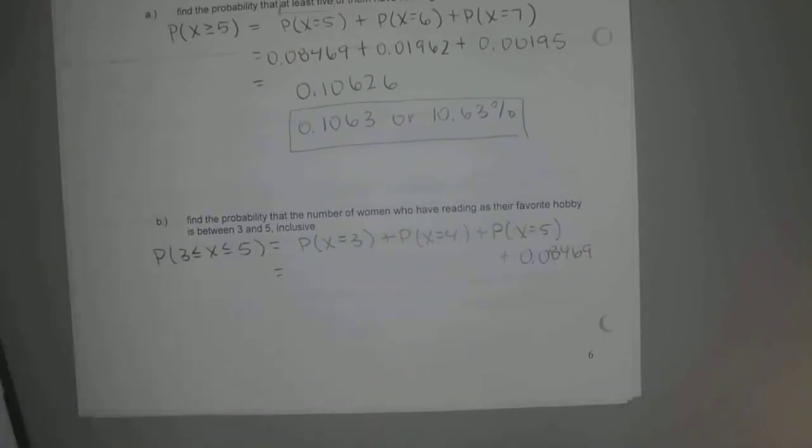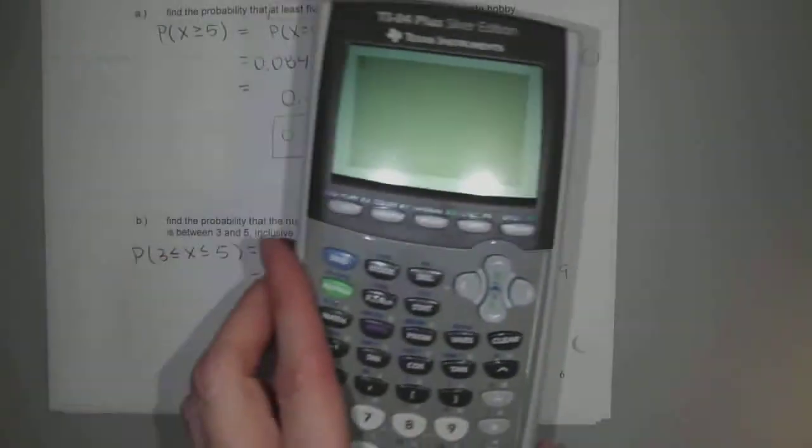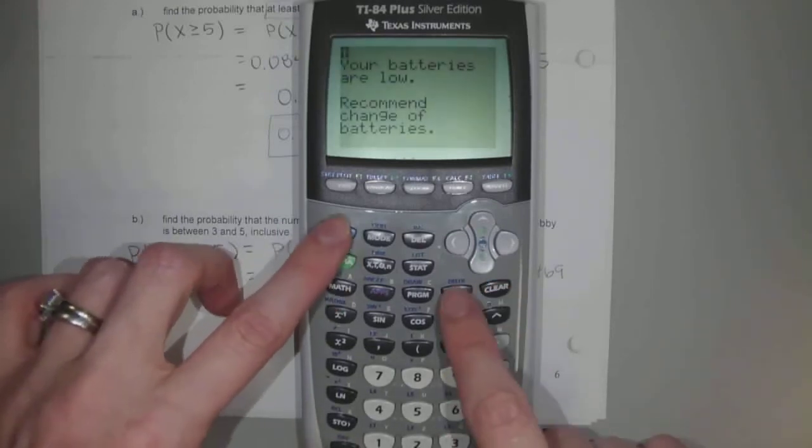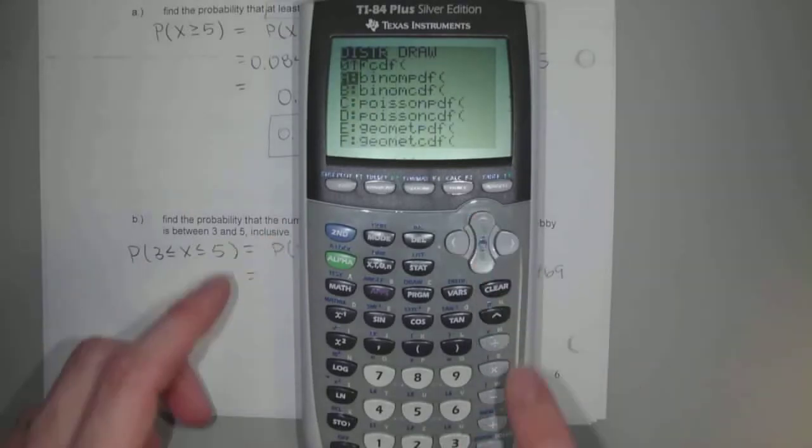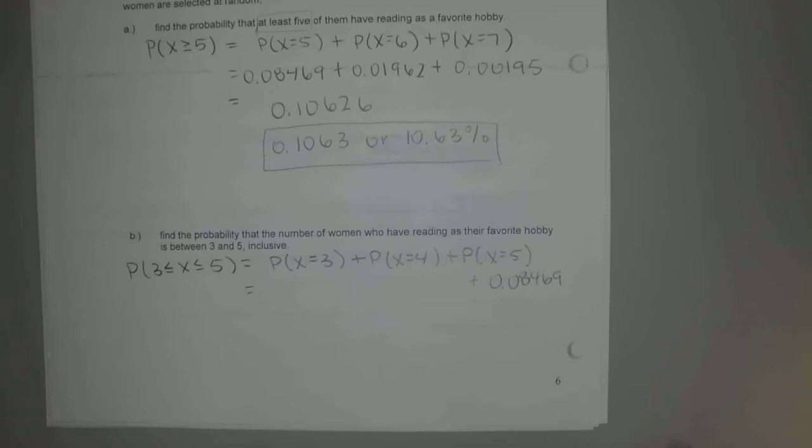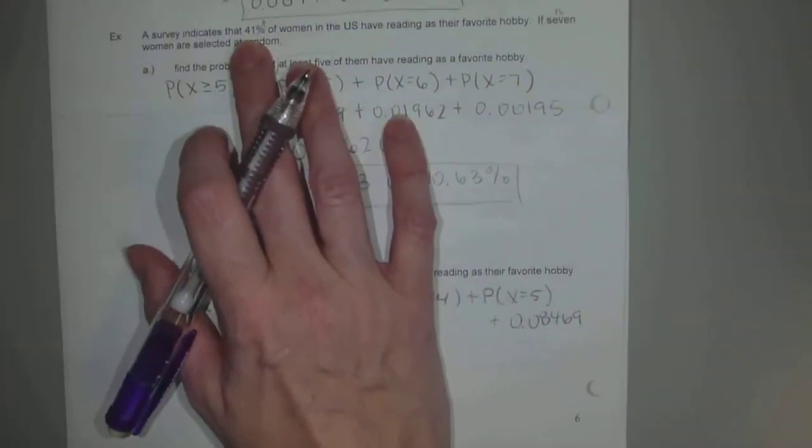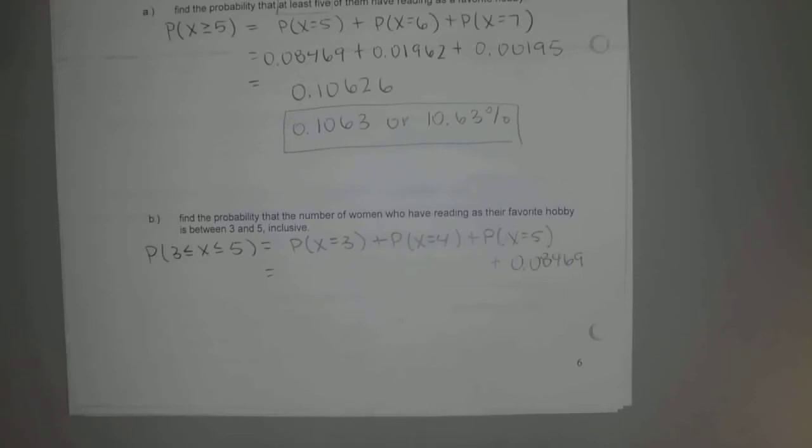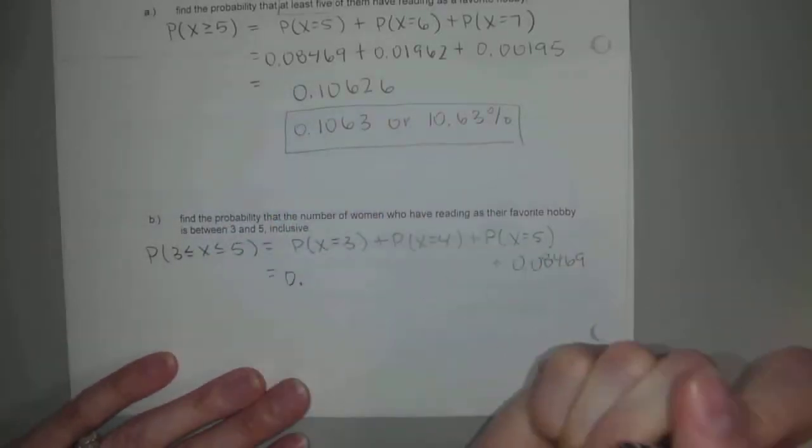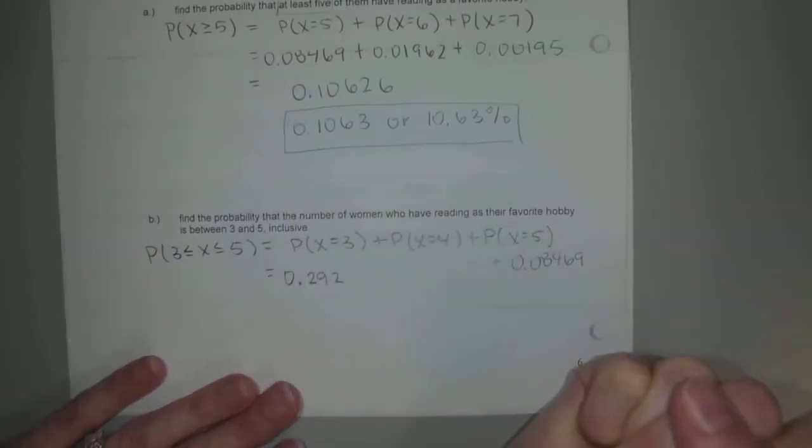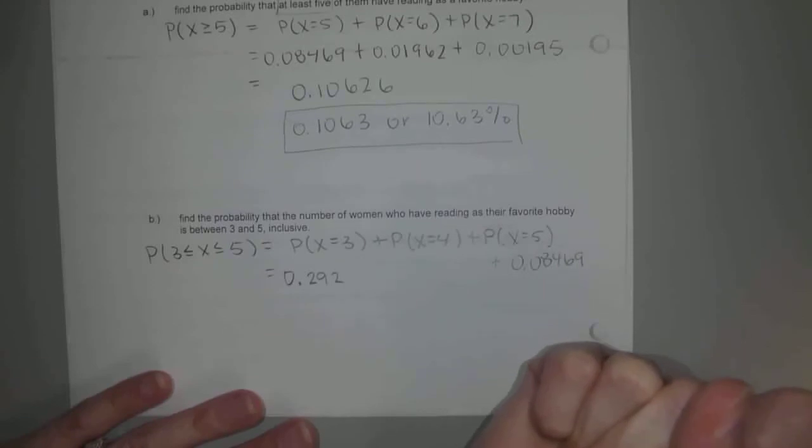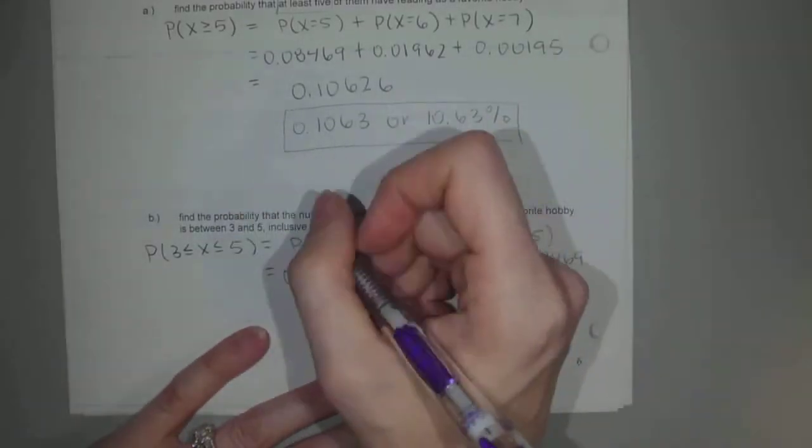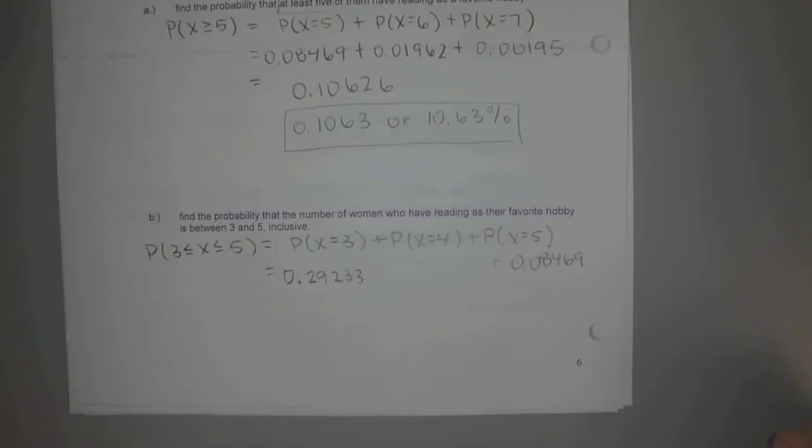I still can just do that second enter or whatever. So I'm going to go to my probabilities again. So second vars and I'm going to scroll to binomial PDF. We're still asking seven women. The probability of them saying they like reading is still 41%. But now I'm worried about three of those ladies saying they have reading as their favorite hobby. Rounded to five decimals, what do you get? 0.29233. Does that look right?